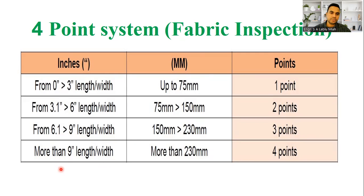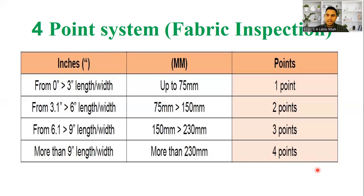If the defect is less than 9 inches, then the penalty point is 3. If the defect is 9 inches or more, then the penalty point is 4. If the penalty point is 4, the maximum assigned is 4.